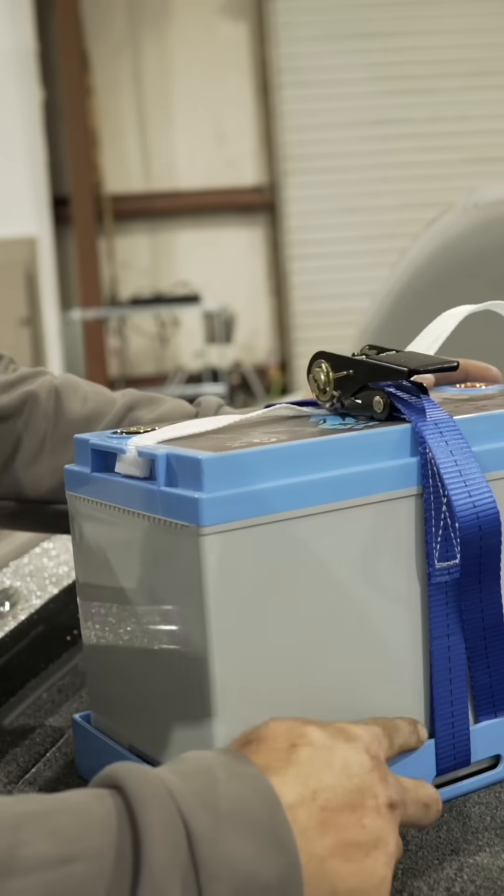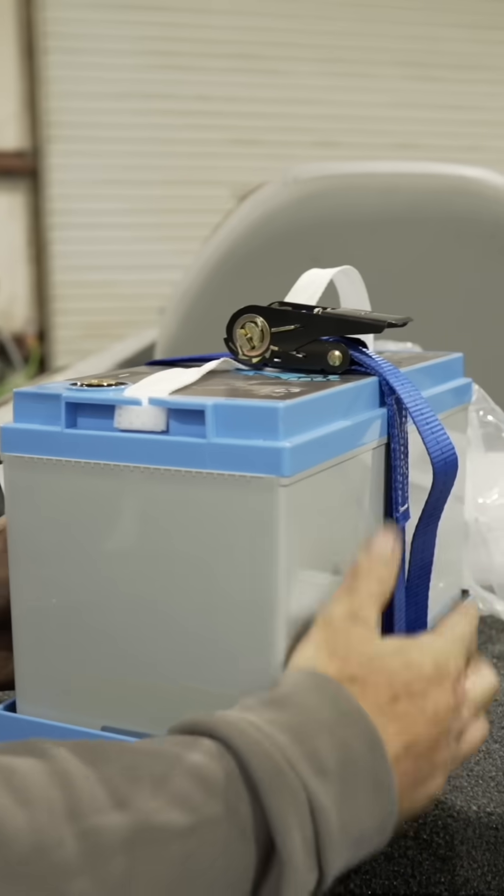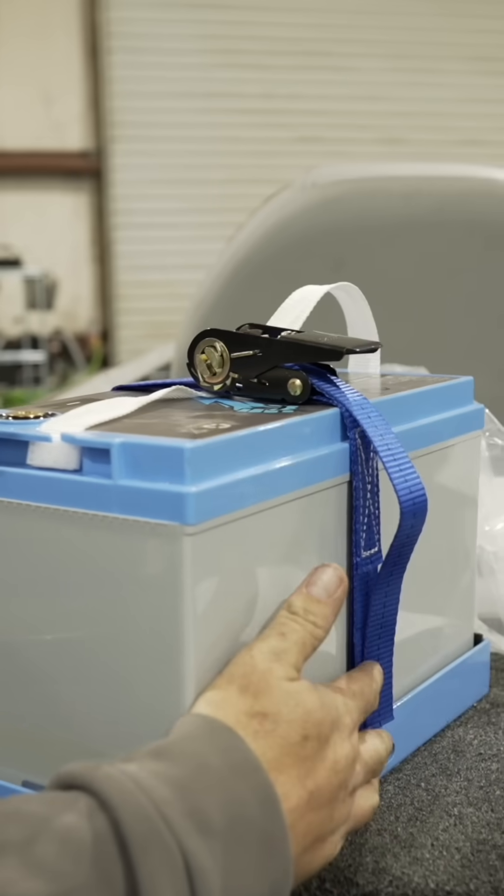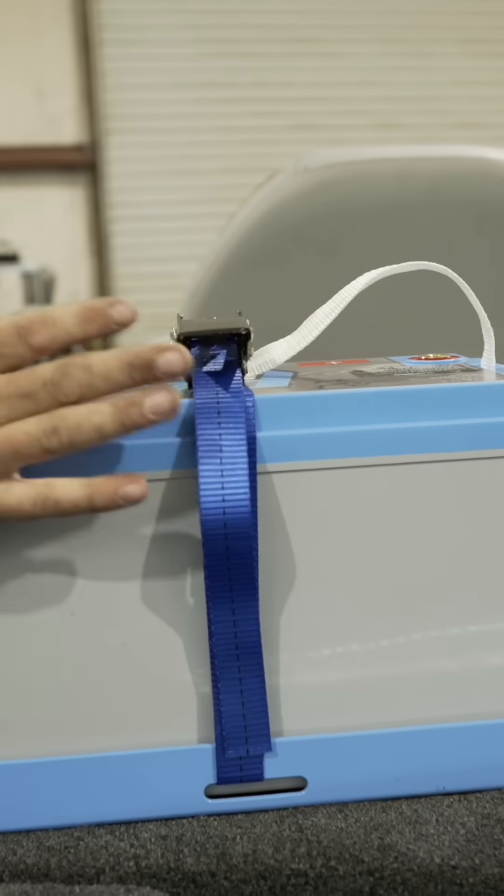Our strap is double looped over here, so it's got two straps going around that outer mounting cutout, and then it's coming over the top of the battery.